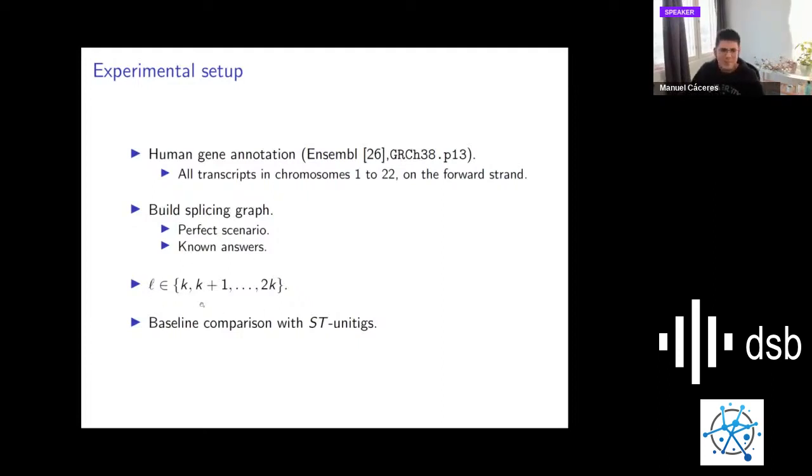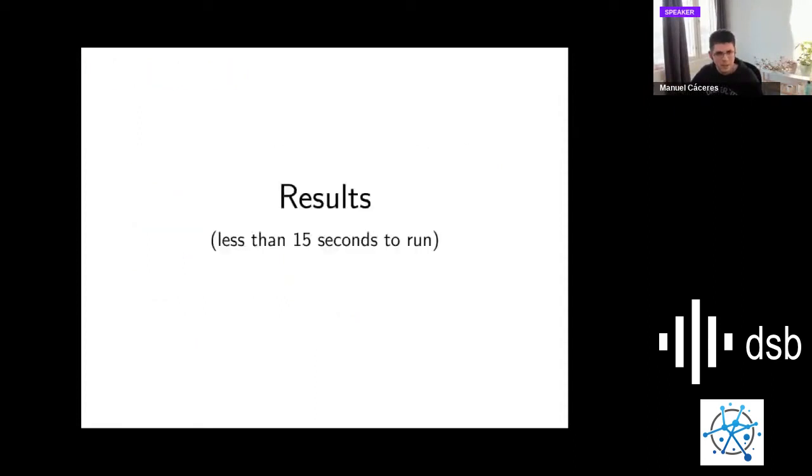To experiment, since in practice we don't know the number of transcripts in our sample, we test L to be the minimum possible paths, the width of the DAG, until 2k to try the minimum number. As a baseline comparison, we take st-unitigs, which are just an extension of unitigs, these paths in the graph whose internal nodes have in-degree and out-degree equal to 1, because those are safe in the problem since we have to cover vertices.